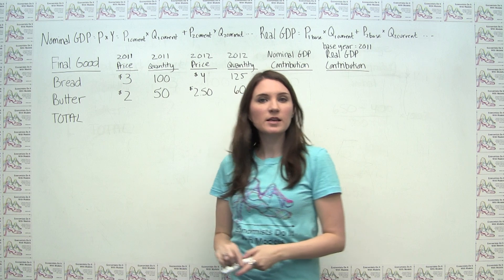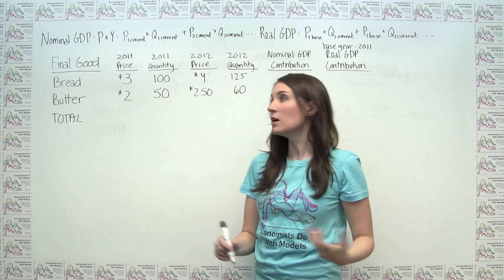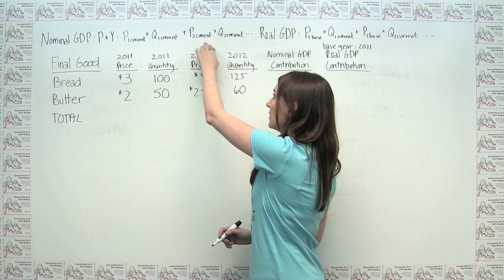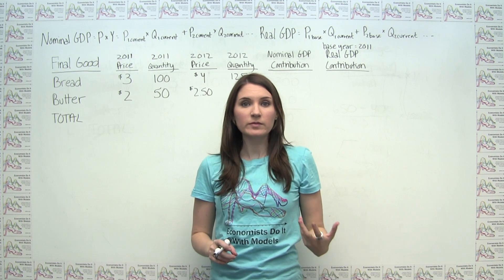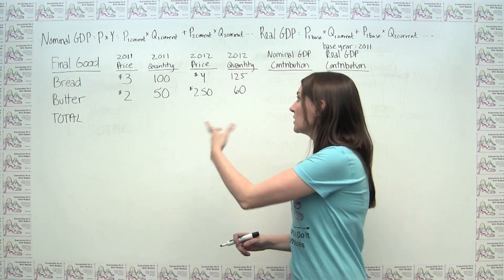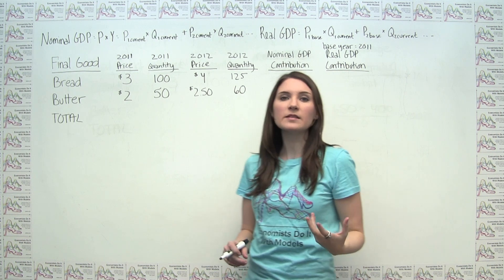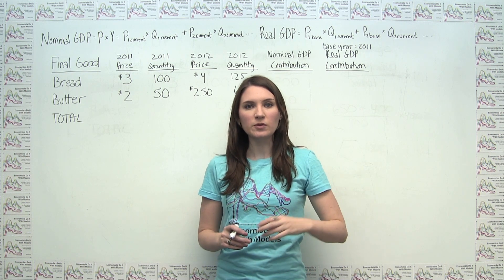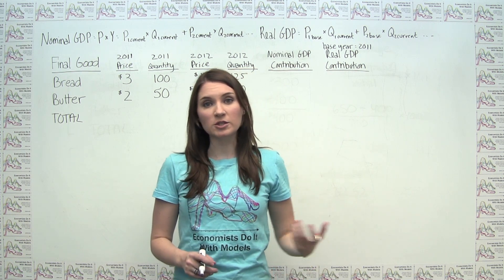Nominal GDP is just: in any given year, we're going to take the price of an item in that year and multiply it by the quantity of that item in that year, then do the same for the second item, and so on and so forth, and add all those up to get nominal GDP. We're only looking at current prices and quantities, and when we look at year-over-year changes in GDP, we're seeing both changes in the absolute quantities of things being bought and sold, but also changes in prices.